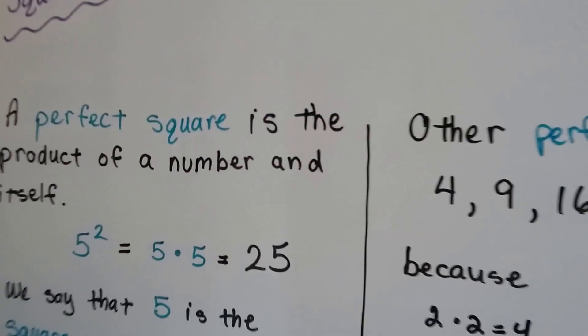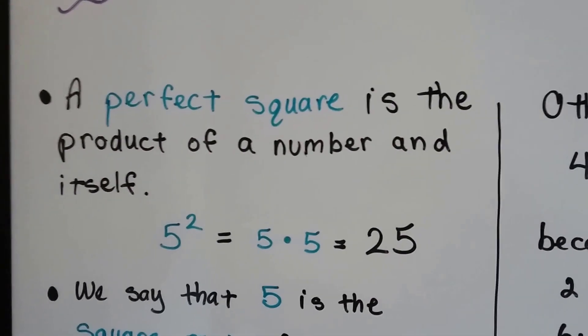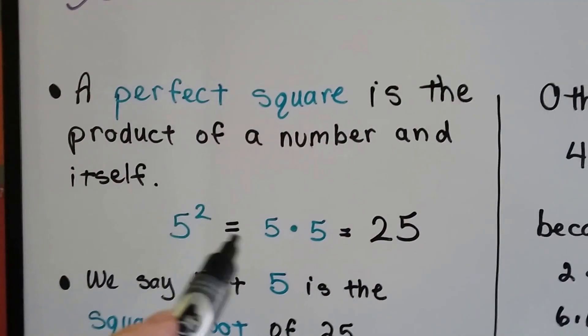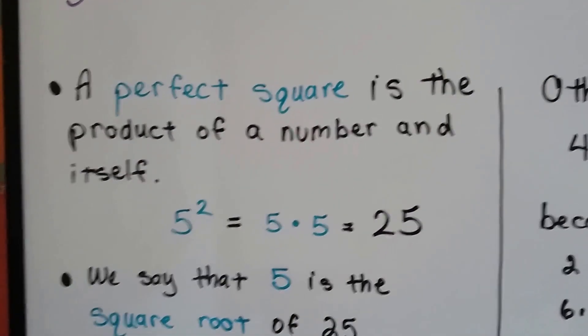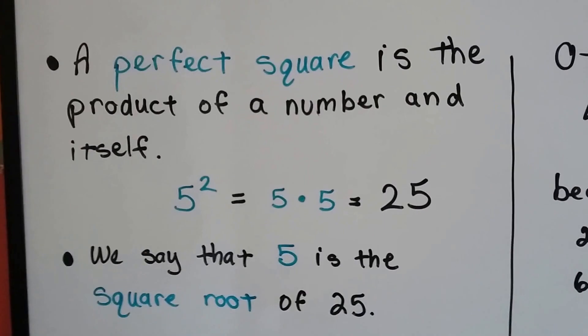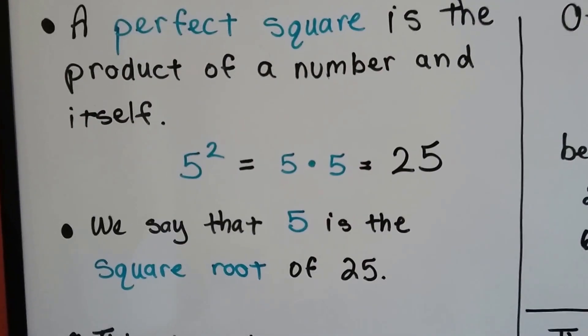A perfect square is the product of a number and itself. Five squared is equal to five times five which equals 25. We say that the five is the square root of 25.